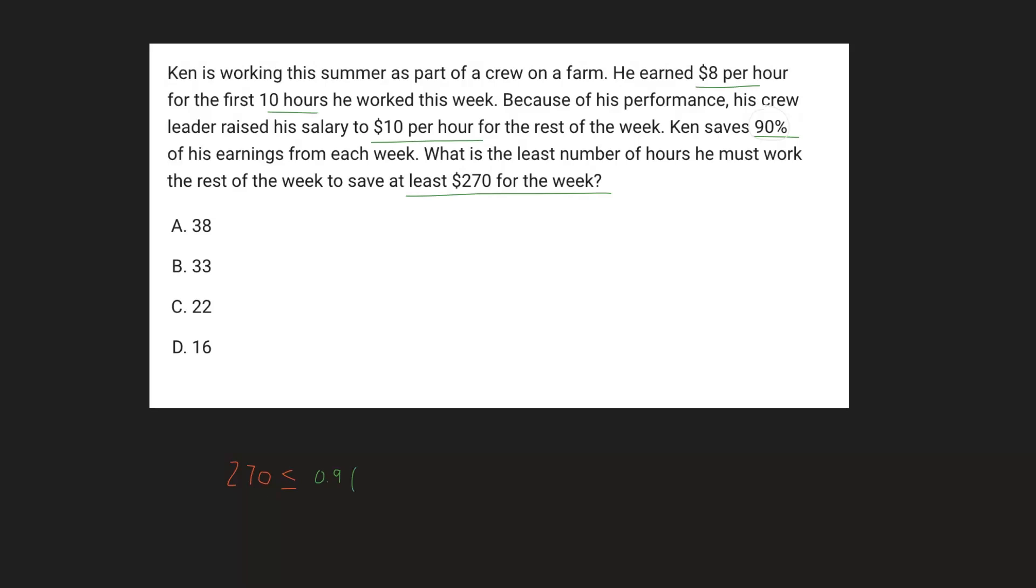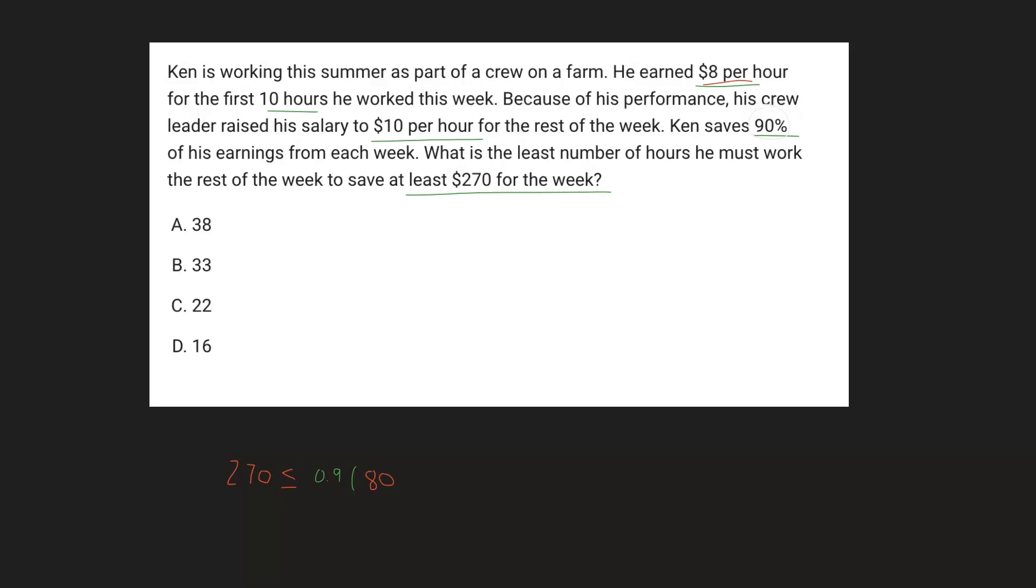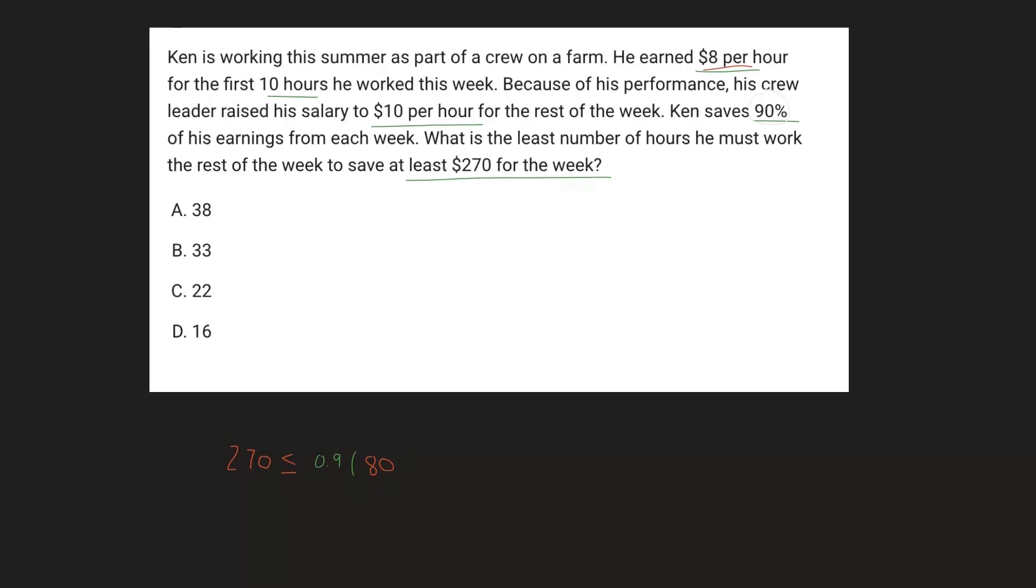So the first thing you want to account for is his initial 10 hours that he worked. So he worked that initial 10 hours at a rate of $8 per hour. And therefore, since he worked 10 hours at $8 per hour, he made $80. So we just write a flat $80 right there. But then his performance increased, and therefore his salary also increased. It says his crew raised his salary to $10 per hour.